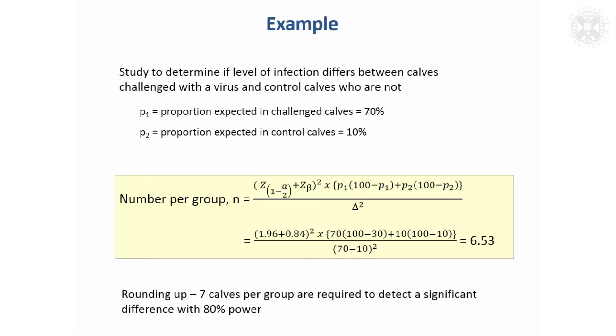You might hope to see that those that are challenged, 70% get this particular infection. If they're not challenged, they might pick it up from somewhere else or from some of the other calves, and you might expect to see 10%.